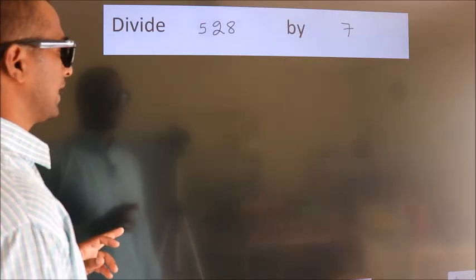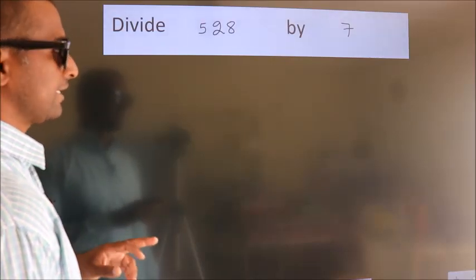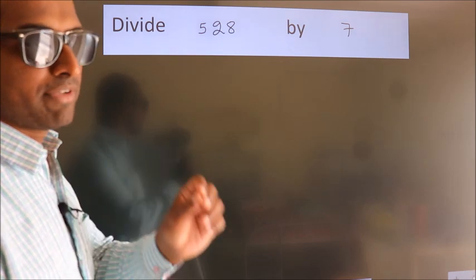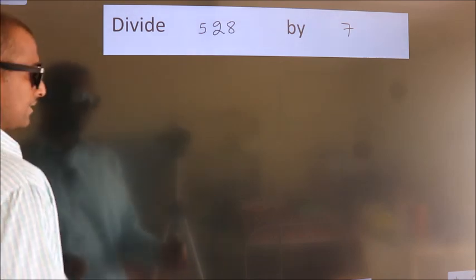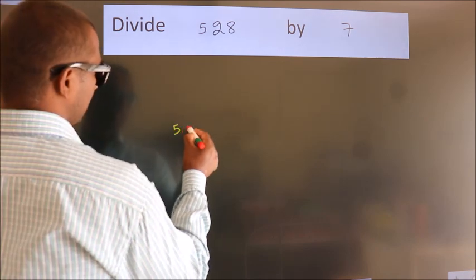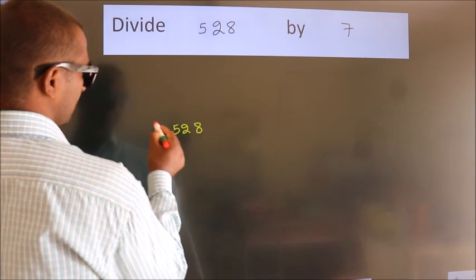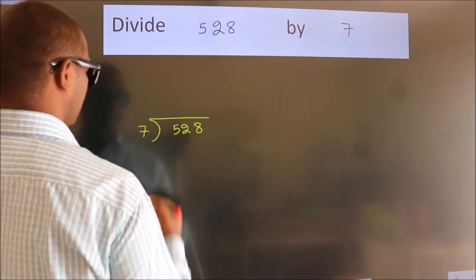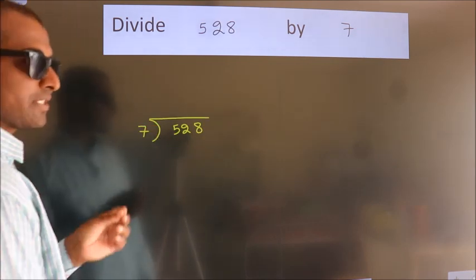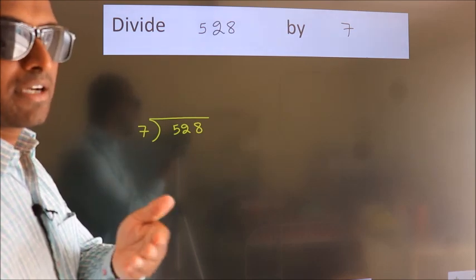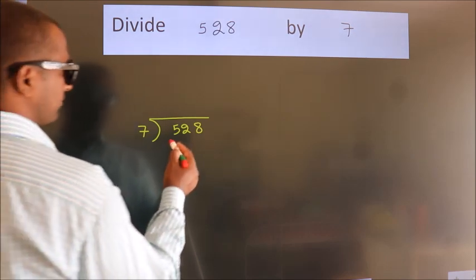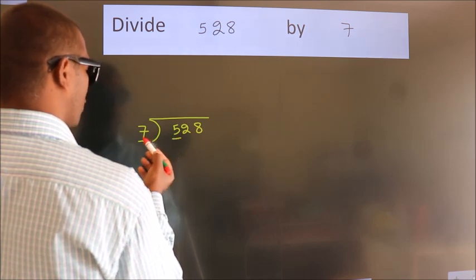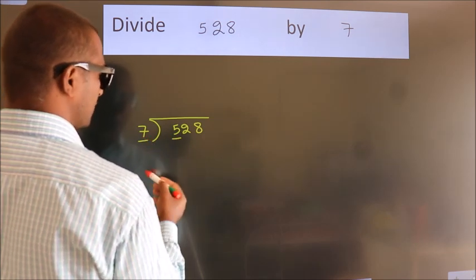Divide 528 by 7. To do this division, we should frame it in this way: 528 here, 7 here. This is your step 1. Next, here we have 5. Since 7 is greater than 5, we should take two numbers: 52.